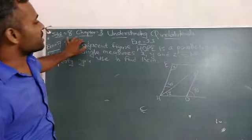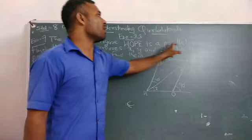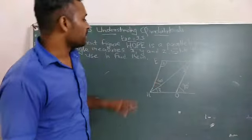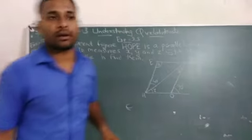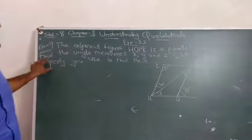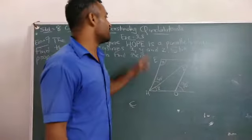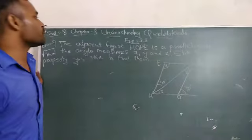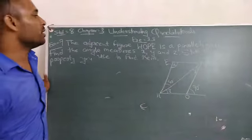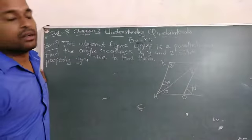Question is, in the given figure, HOPE is a parallelogram. We need to find the angle measures X, Y, and Z. Also, state the property you use to find them. We need to write what property we use.